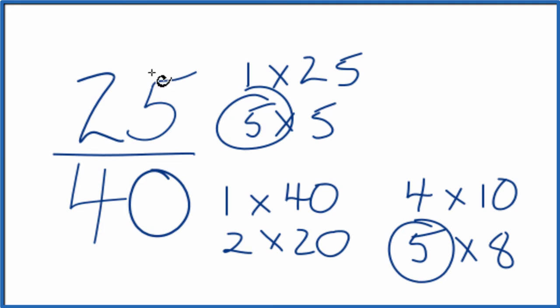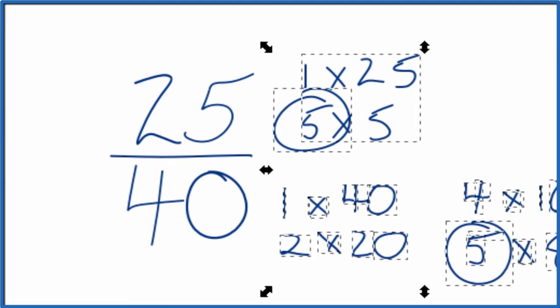So we'll divide 25 by 5, 40 by 5, and we'll have simplified 25/40. Let's move these over here.